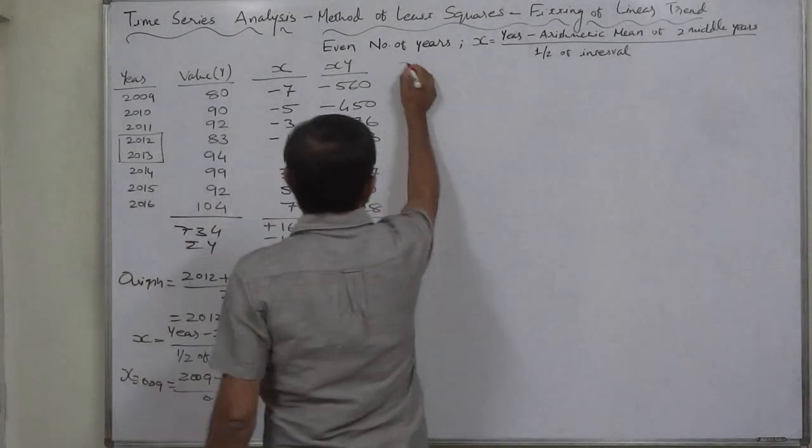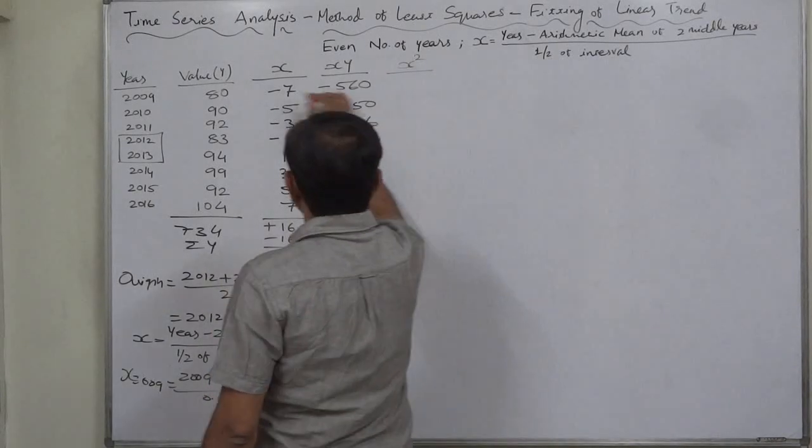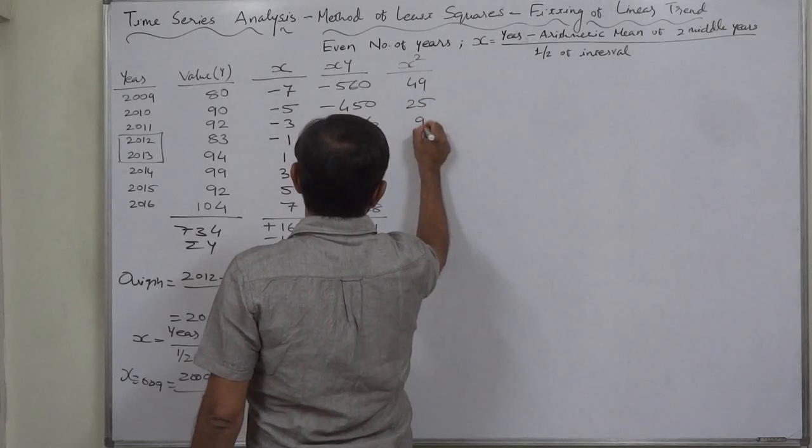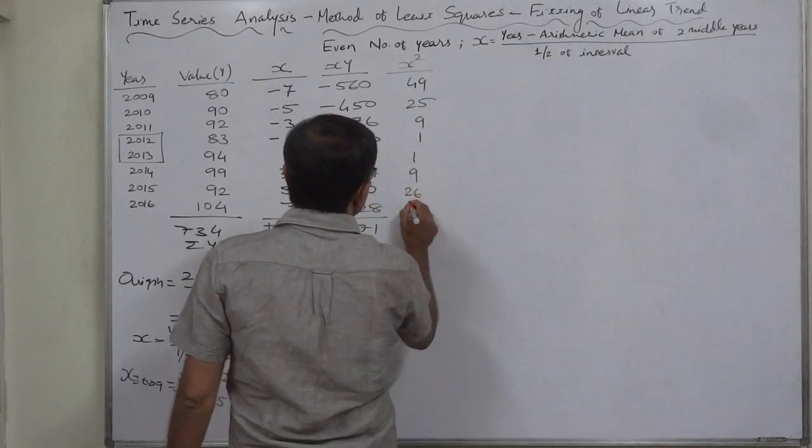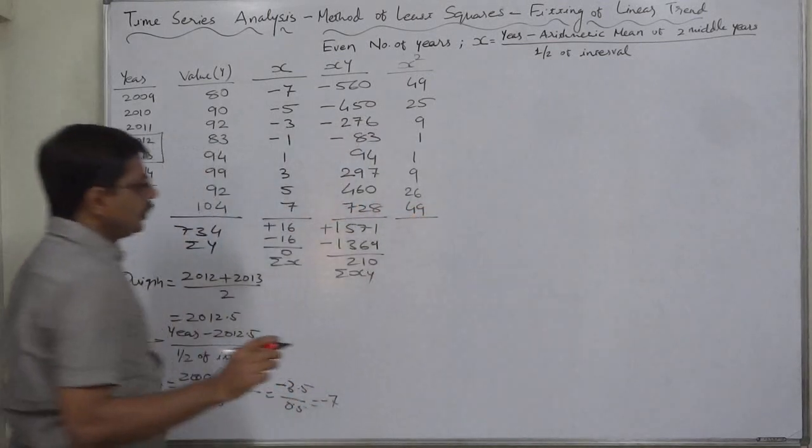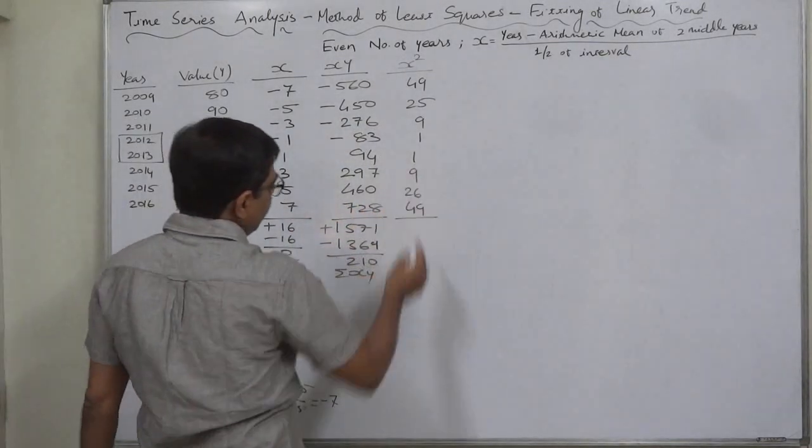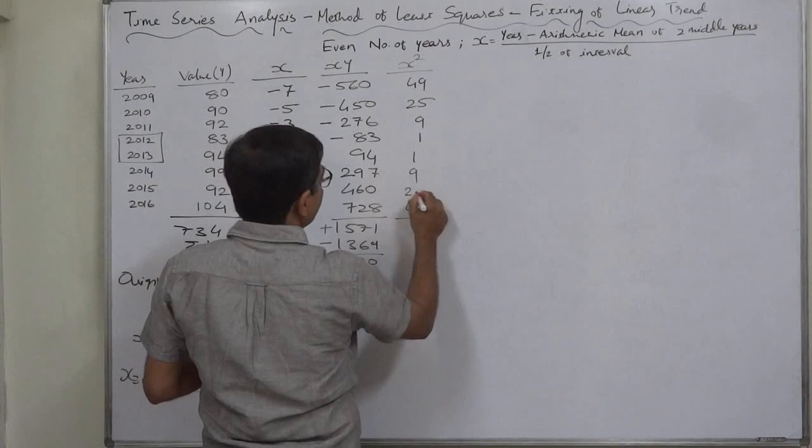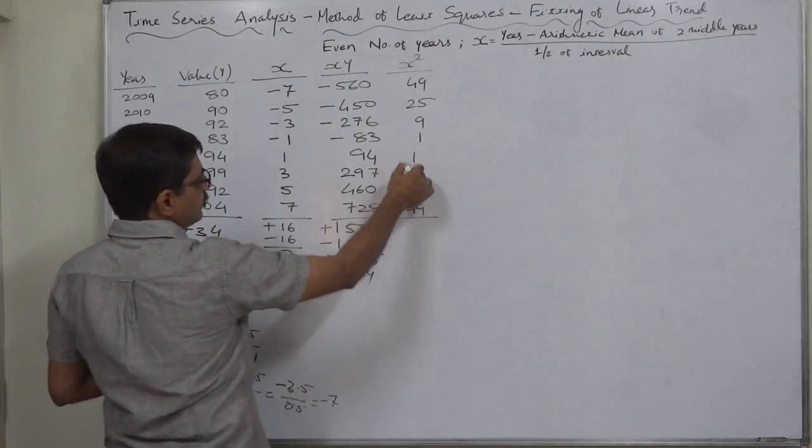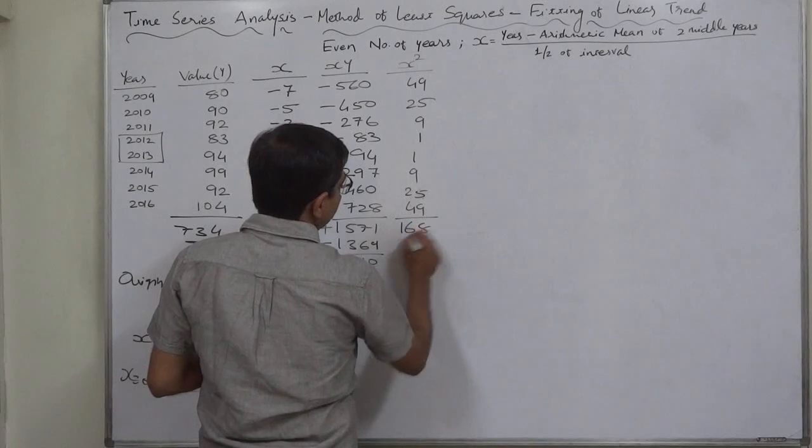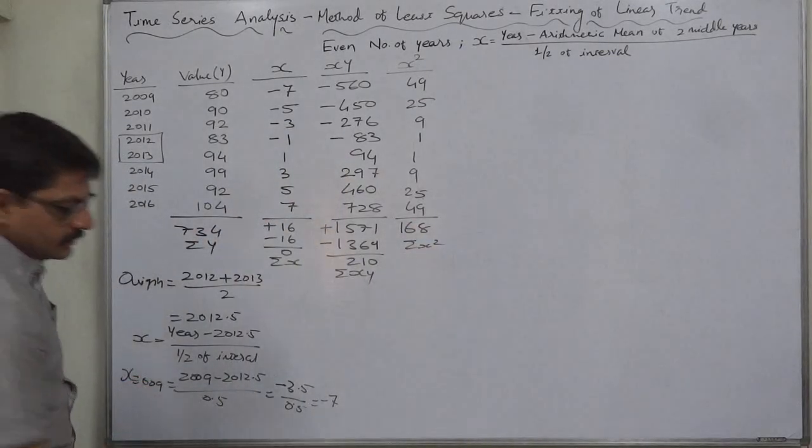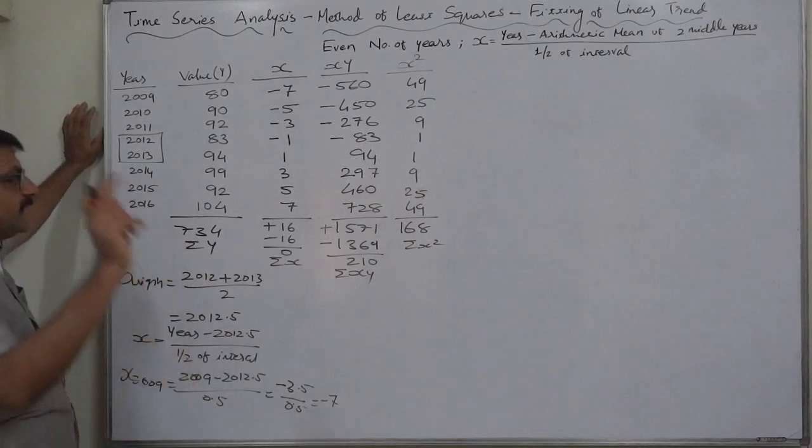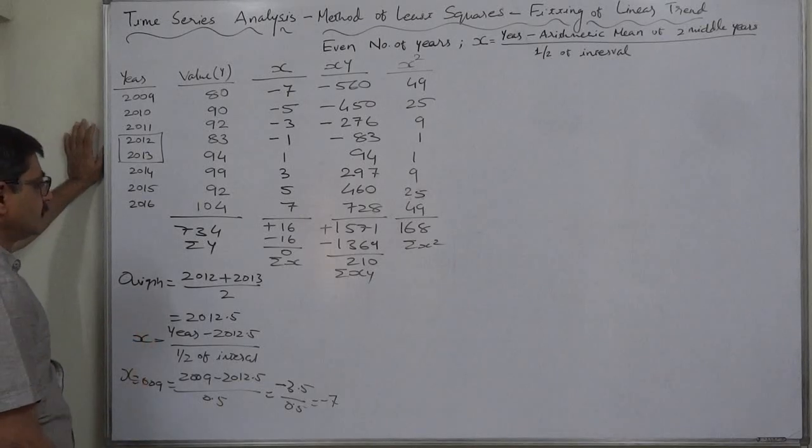And one more column we need is X square. 7 square is 49, 5 square is 25, 3 square is 9, 1 square is 1, and same in reverse order. 75 plus 10 is 85, 85 plus 85, 49, 25, so it will be 74 plus 175 is 84, 84 plus 84 is 168, sigma X square. Sometimes because of hurry I also made small mistakes, but you please take care. Actually I should take care also.